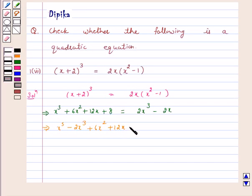This can be rewritten in the form x³ - 2x³ + 6x² + 12x + 2x + 8 = 0.